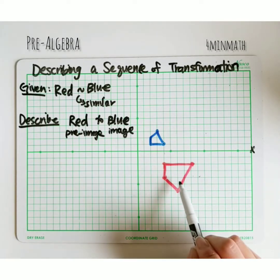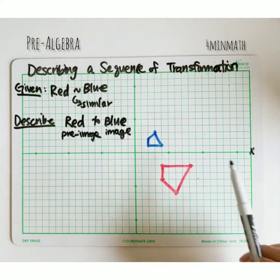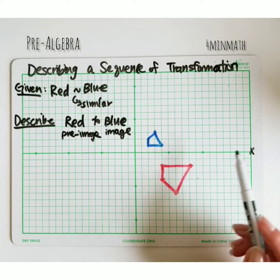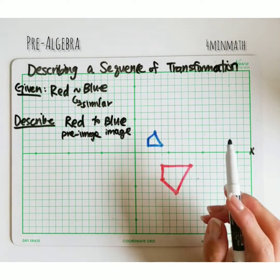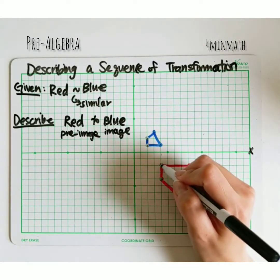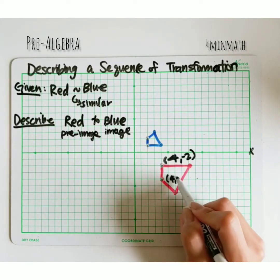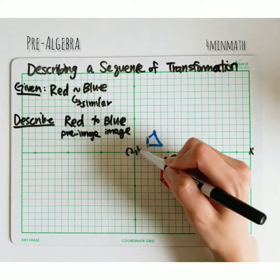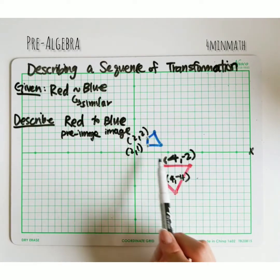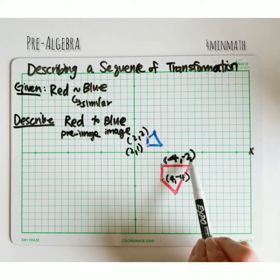Let's shrink the red figure so that it becomes the size of the blue — let's try that first. I'm guessing the scale factor might be one half or one third, so I'm going to look at corresponding points and see if they have any relationship. This point is (4, -2), and that point is (4, -4). The corresponding points on the blue are (2, 1) and (2, 2). I do see that the relationship between those two corresponding points is one half, so I'm seeing a reduction with a scale factor of one half.